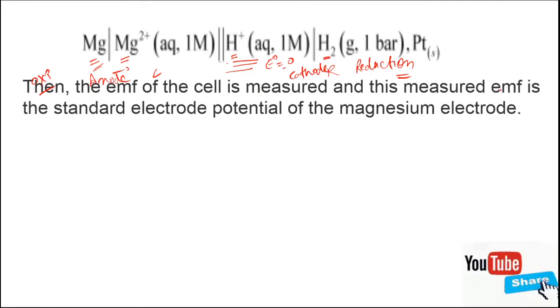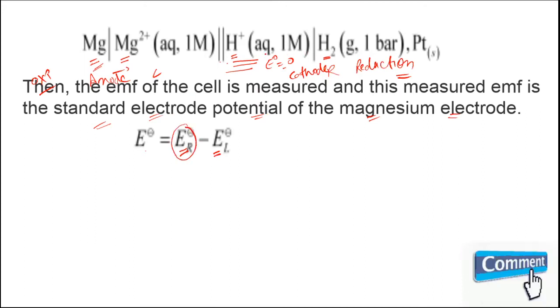What is the reason? As you know, EMF of the cell equals EMF of right minus EMF of left. The right side is the standard hydrogen electrode which has value zero. Thus, the EMF of the cell is due to the electrode which is the anode or left side.